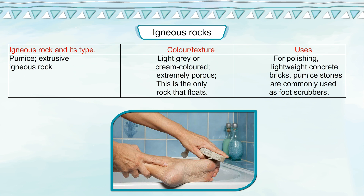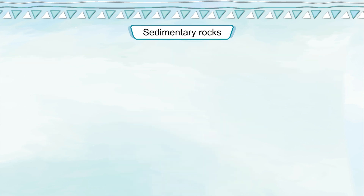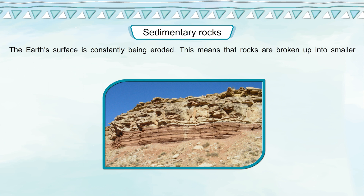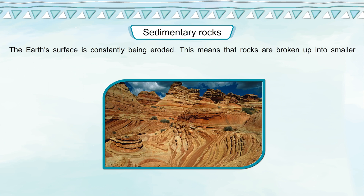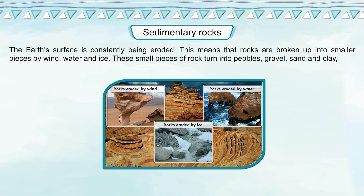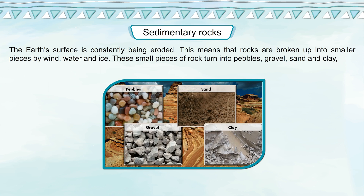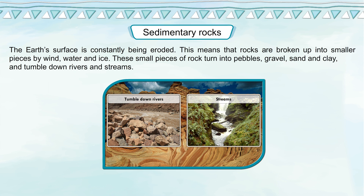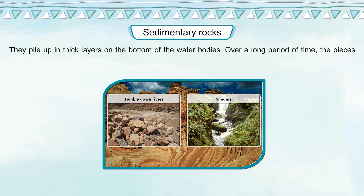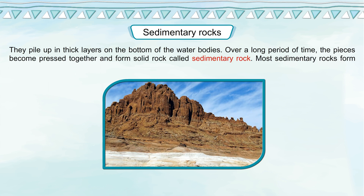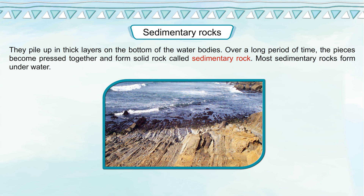Sedimentary rocks: The earth's surface is constantly being eroded, meaning rocks are broken up into smaller pieces by wind, water, and ice. These small pieces of rock turn into pebbles, gravel, sand, and clay and tumble down rivers and streams. They pile up in thick layers on the bottom of water bodies. Over a long period of time, the pieces become pressed together and form solid rock called sedimentary rock. Most sedimentary rocks form underwater.